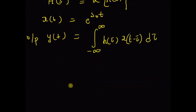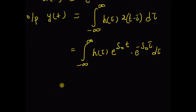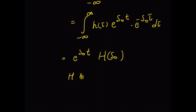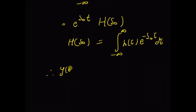Since x(t) = e^(s₀t), we can rewrite the integral as the integral from minus infinity to plus infinity of h(τ) · e^(s₀(t−τ)) dτ, which simplifies to e^(s₀t) multiplied by H(s₀), where H(s₀) is the Laplace transform evaluated at s = s₀, given by the integral from minus infinity to plus infinity of h(τ) · e^(−s₀τ) dτ. Therefore, y(t) = x(t) · H(s₀), and x(t) is confirmed as the eigen function.